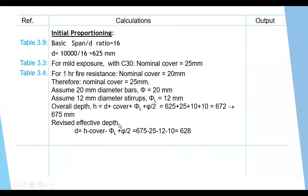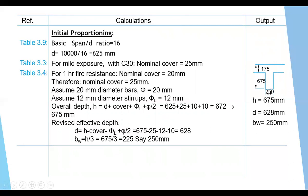Now we get the revised effective depth: D_revised = H − cover − φ_link − φ/2 = 628 mm. For the web width, B_web is taken between H/2 and H/3; we take H/3, rounded to 250 mm. So from initial proportioning, the beam dimensions are: B_web = 250 mm, total H = 675 mm, and effective depth D = 628 mm.